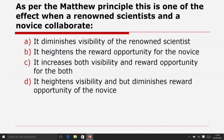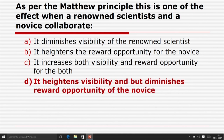As per the Matthew principle, when a renowned scientist and a novice collaborate: it diminishes visibility of the renowned scientist, it heightens the reward opportunity for the novice, it increases both visibility and reward opportunity for both, or it heightens visibility but diminishes reward opportunity of the novice. The answer is: it heightens visibility but diminishes reward opportunity for the novice.